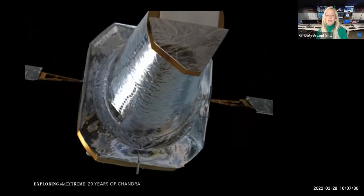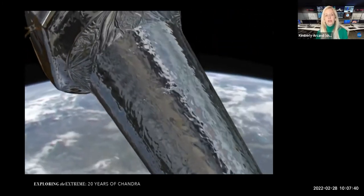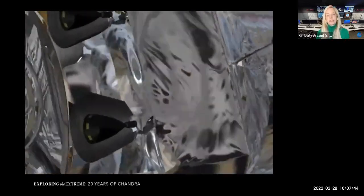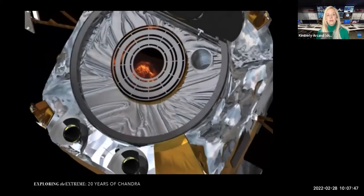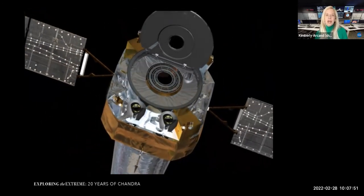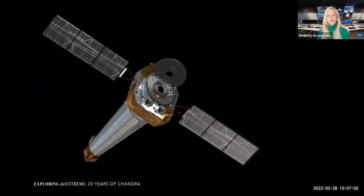So Chandra, as I mentioned, is about the size of a school bus. It goes about a third of the way to the moon at its farthest point from Earth. What that means is that Chandra had to work perfectly because it was going too far to be able to be worked on by astronauts in the future if something broke down or if something wasn't working right. So in order to take Chandra to the doctor, essentially, we do that through code. And we'll talk about that a little bit more.